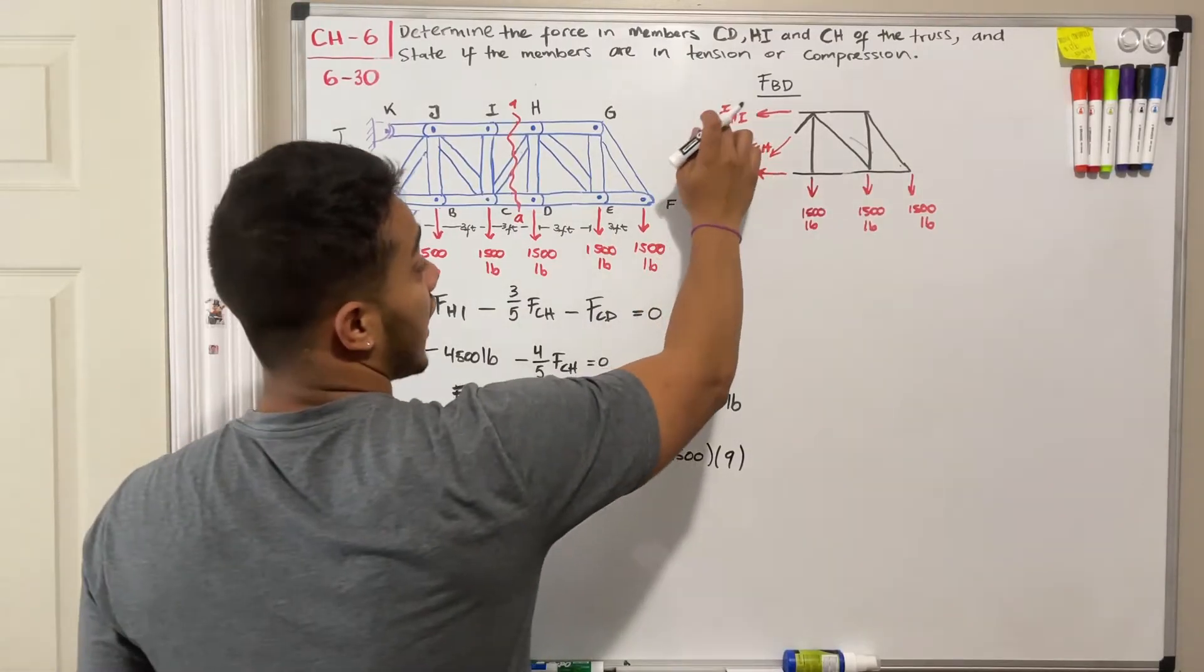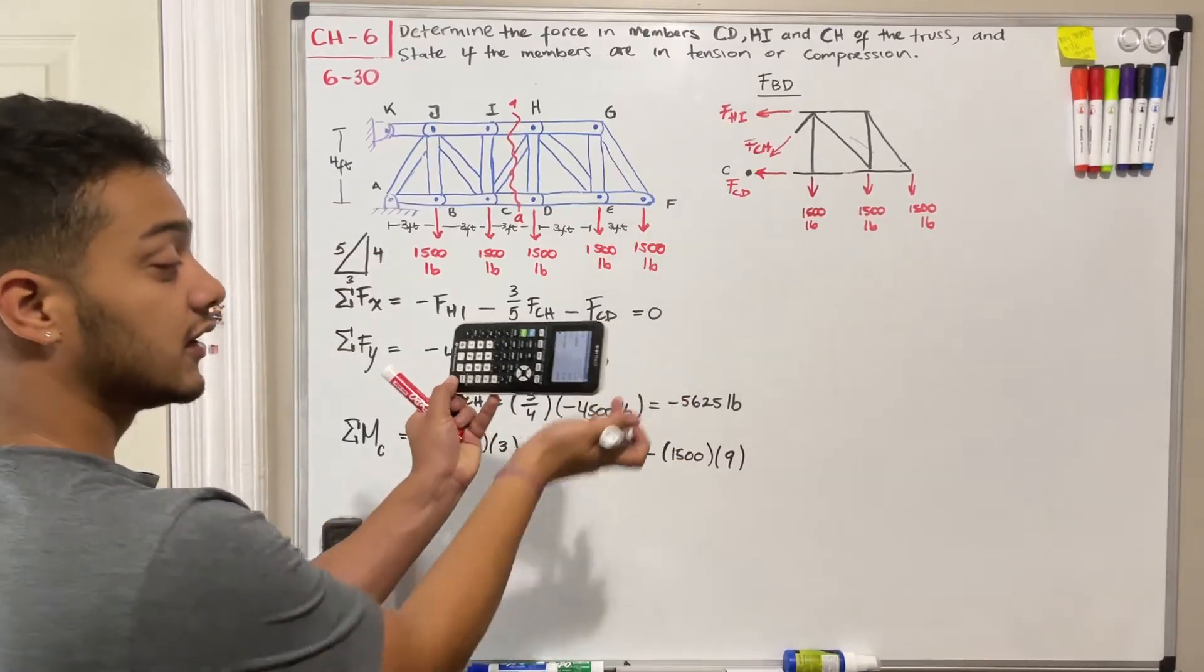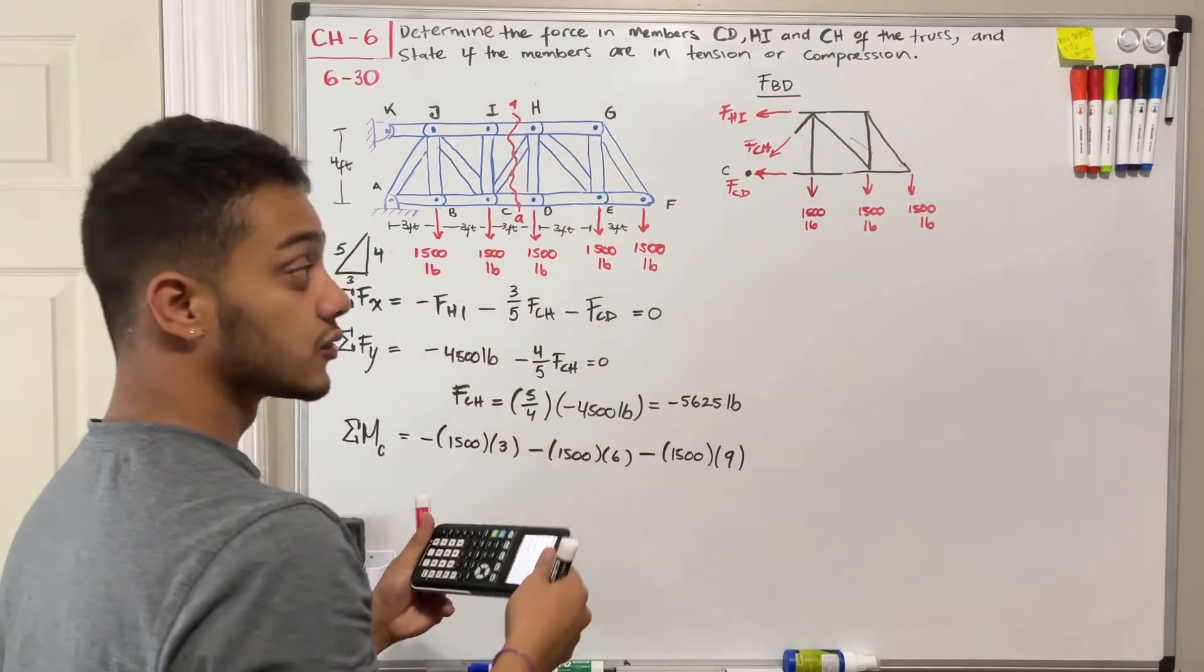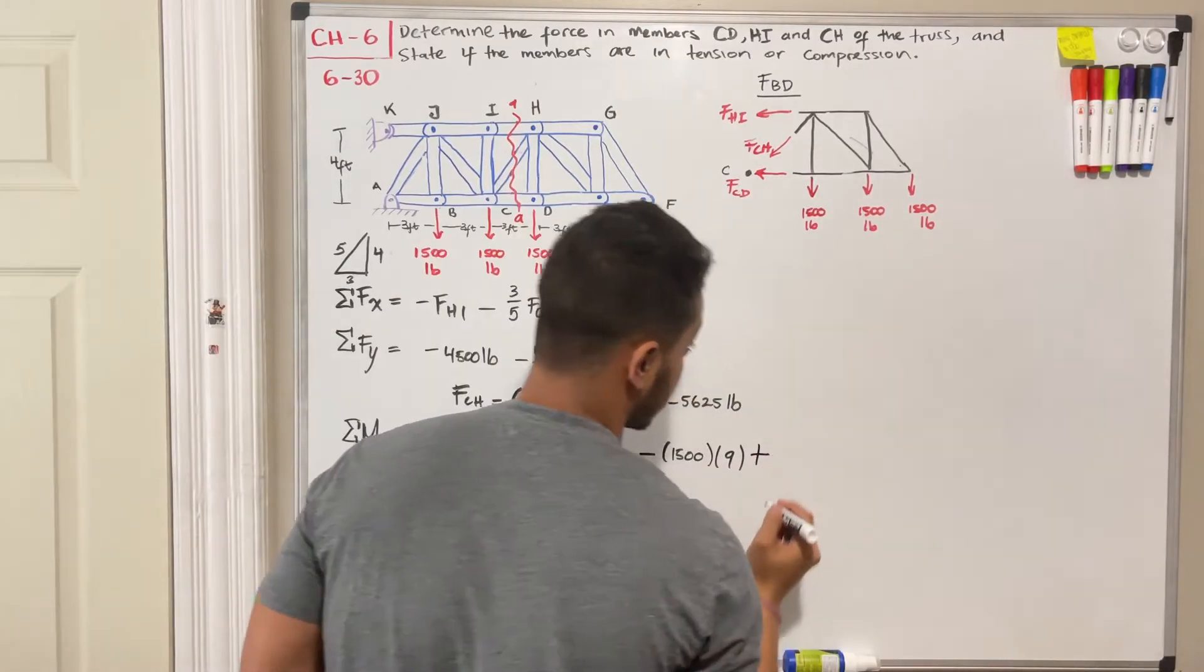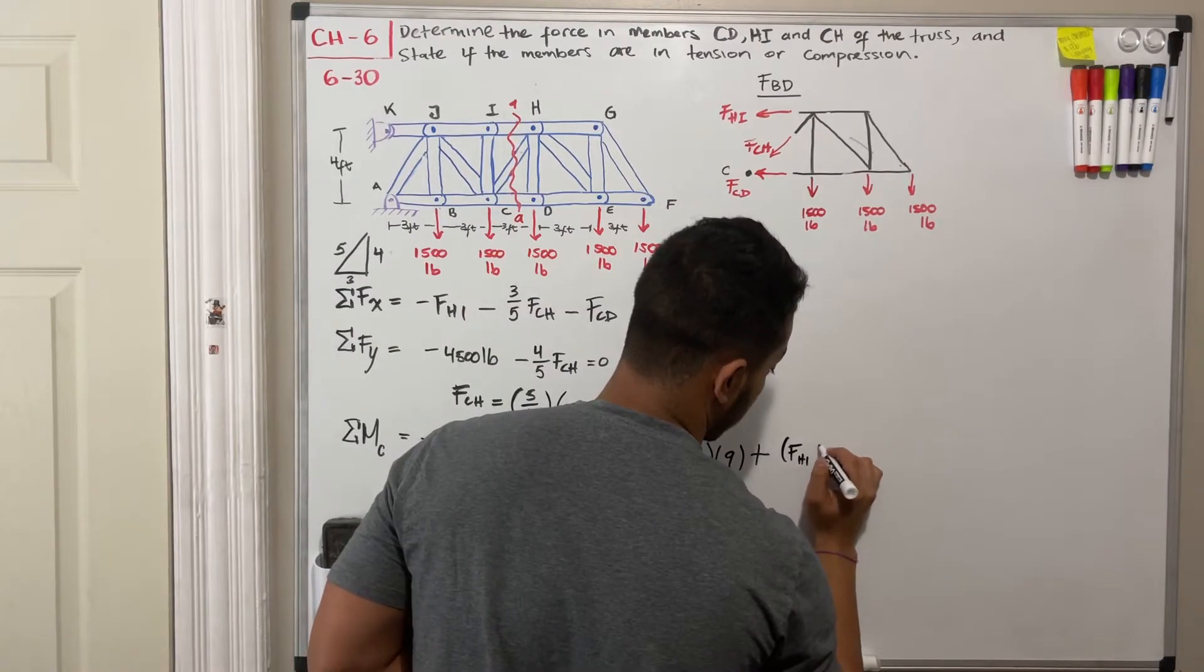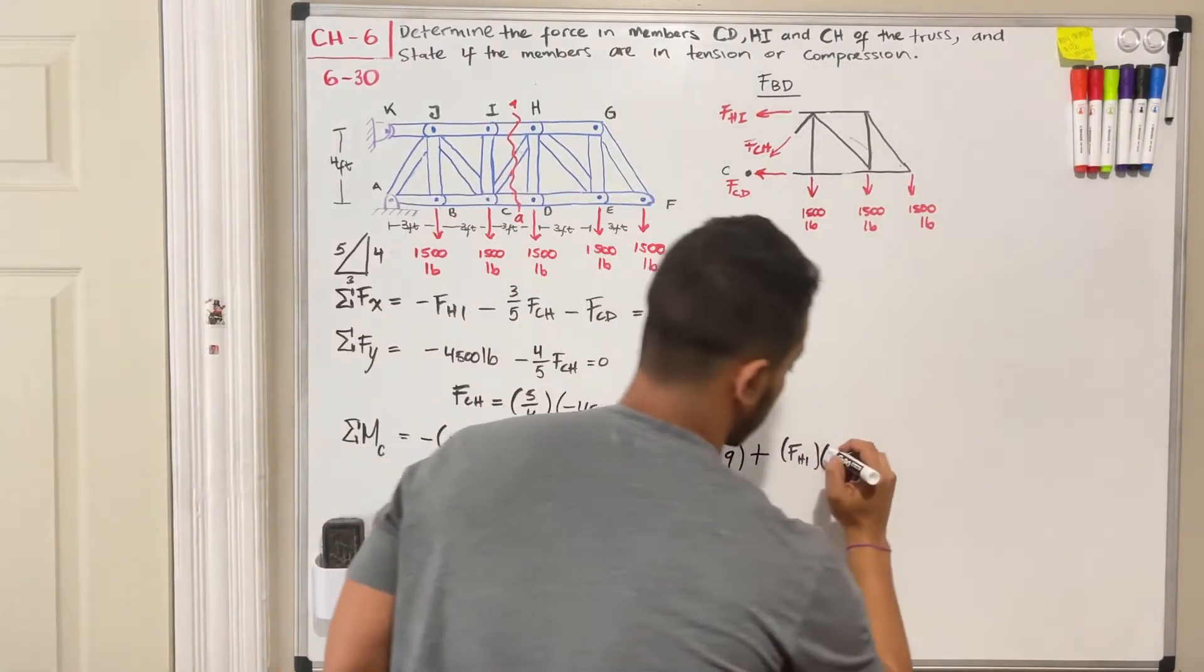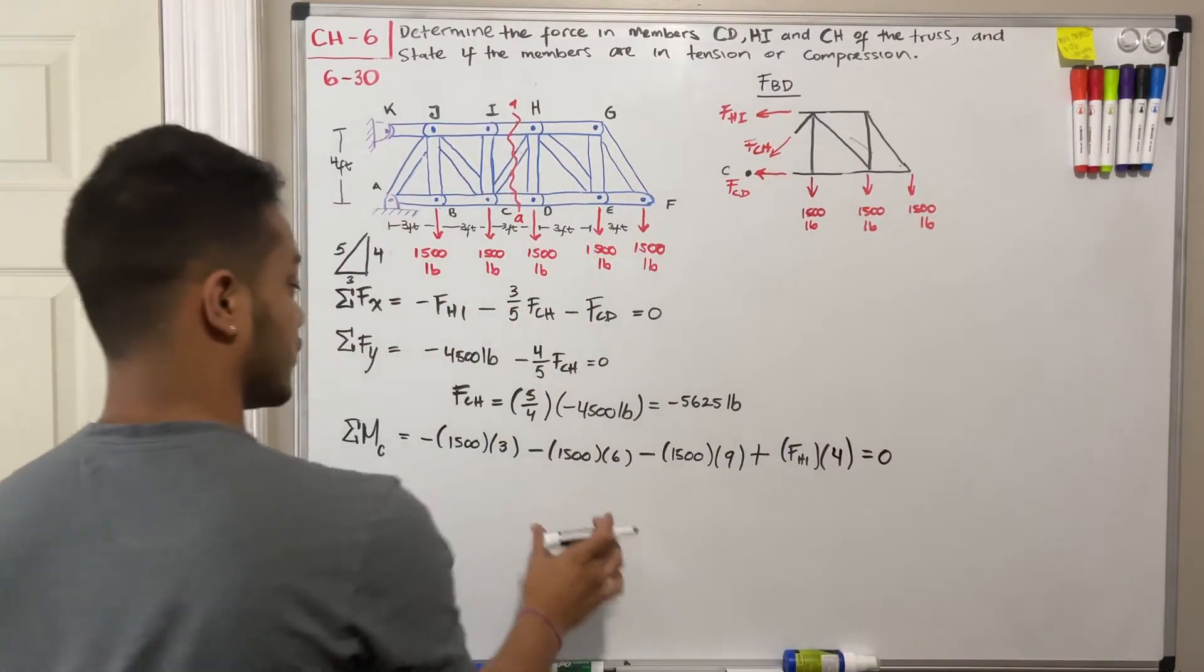So FHI, if I'm holding here down and I'm applying a force going to the X, this thing wants to rotate counterclockwise and for me, it's positive. So we're going to have positive FHI multiplied by the distance. So what's the distance? It's just simply 4 feet. Okay. So I'm going to multiply by 4 and all these long equations should be equal to zero.